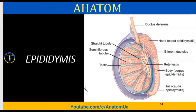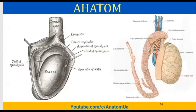After the testis, a very important part is the epididymis. The epididymis has a head, body, and tail. In this organ, spermatozoa are located after development and after efferent ductules of the testis; they are ready for movement to the vas deferens.